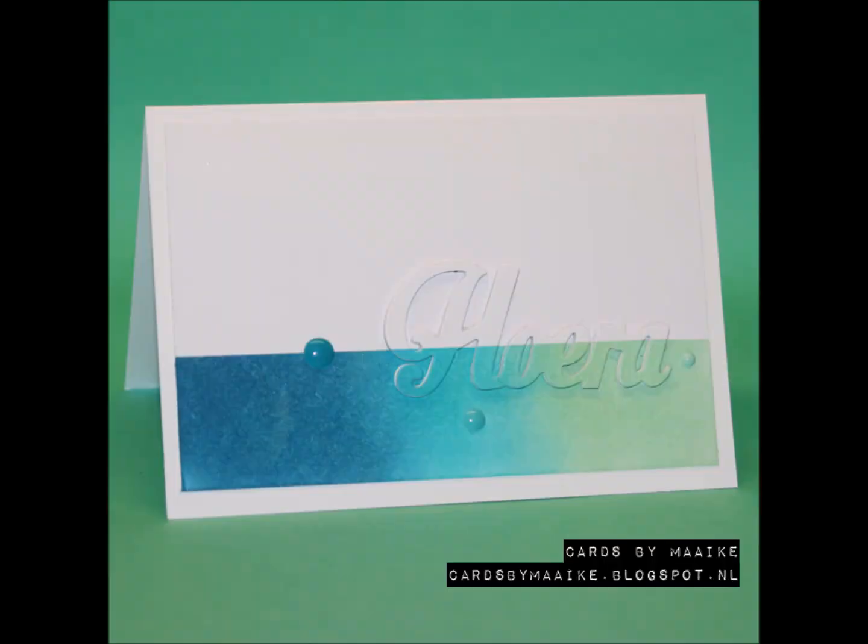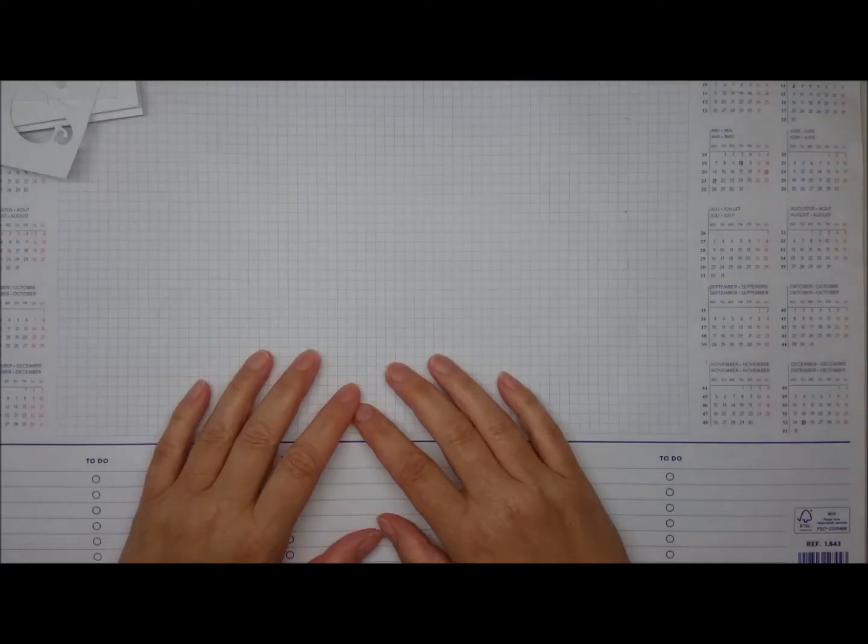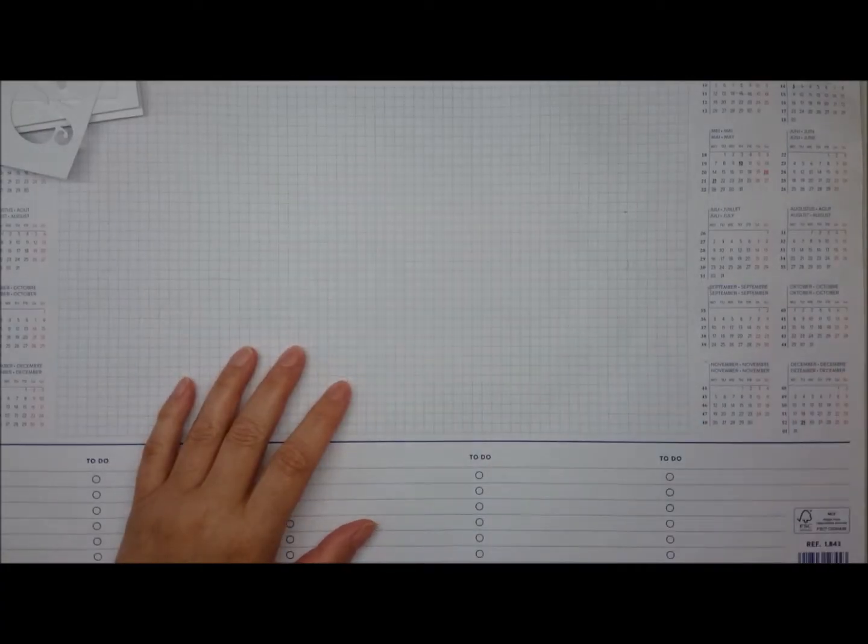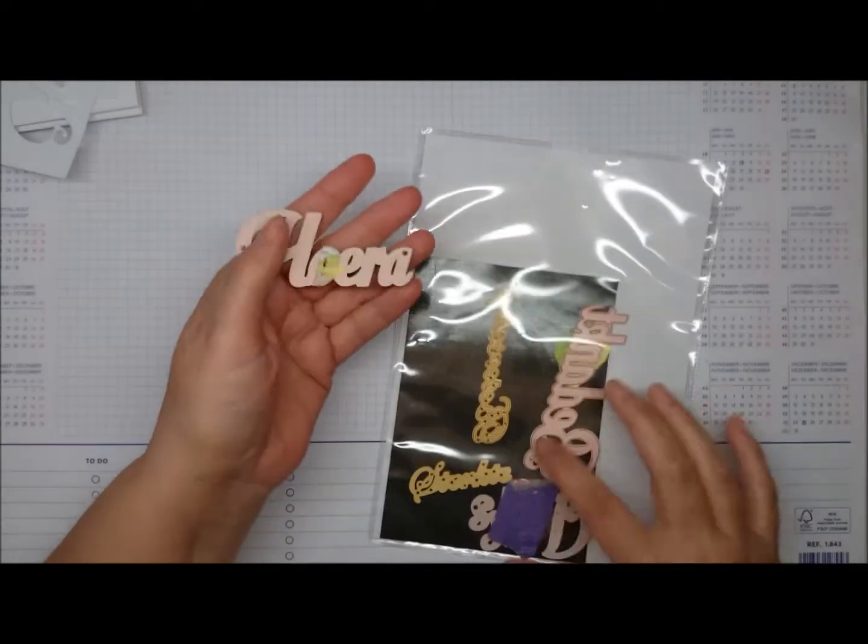Hi guys, it's Mike and today I'm back with a clean and simple minimalist eclipse card. I use an older die from Marianne design but you can use any word that you have or even loose letters if you prefer.